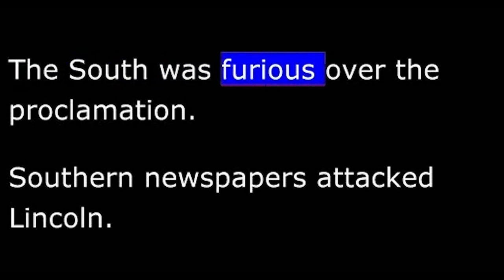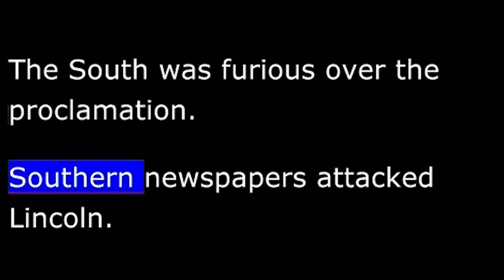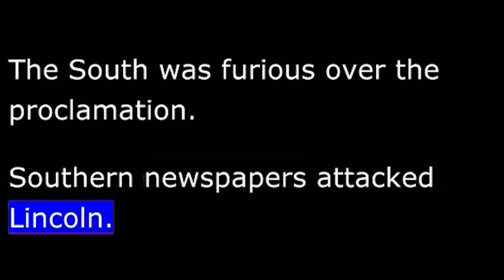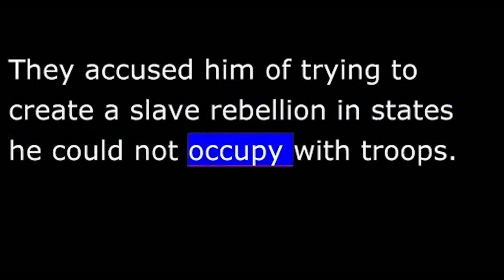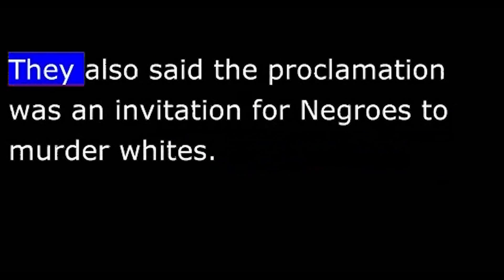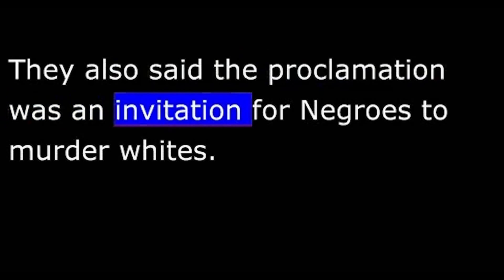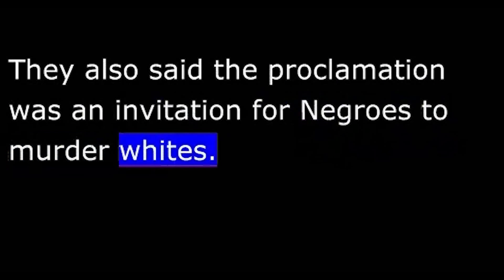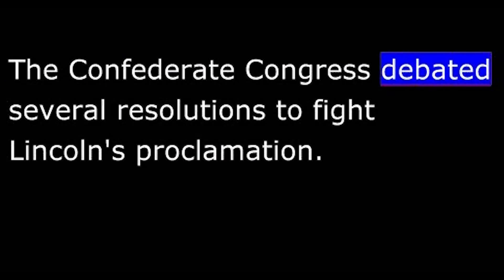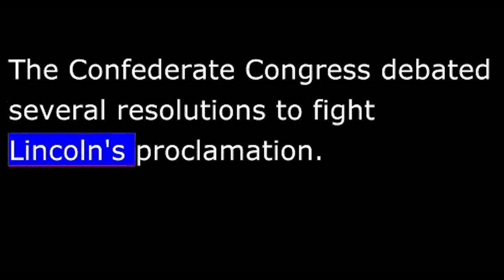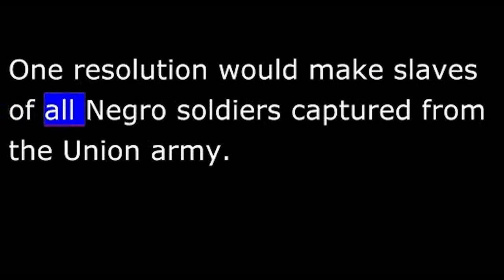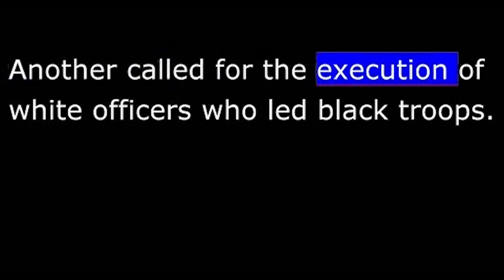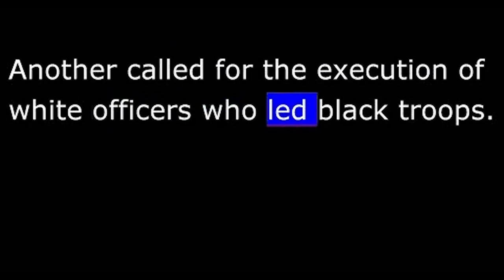The South was furious over the proclamation. Southern newspapers attacked Lincoln, accusing him of trying to create a slave rebellion in states he could not occupy with troops. They also said the proclamation was an invitation for Negroes to murder whites. The Confederate Congress debated several resolutions to fight Lincoln's proclamation — one would make slaves of all Negro soldiers captured from the Union Army, and another called for the execution of white officers who led black troops.